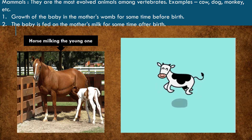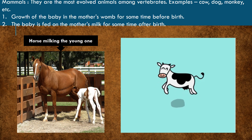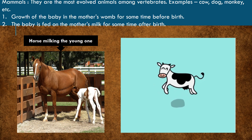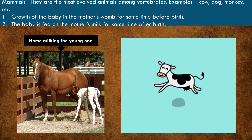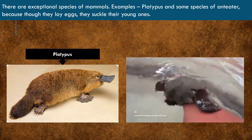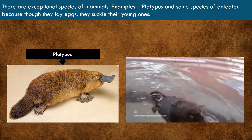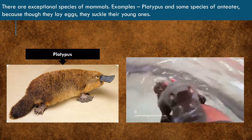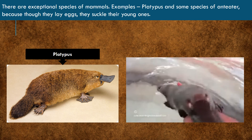Mammals are the most evolved animals among vertebrates. For example, cow, horse, monkey, etc. The two important characteristics of mammals are: first, the baby of a mammal grows in the mother's womb before birth — that is, mammals give birth to their babies. Second, the baby is fed on the mother's milk after birth. But some species of mammals like platypus and anteaters lay eggs. They are considered mammals because they feed their young ones with their milk.